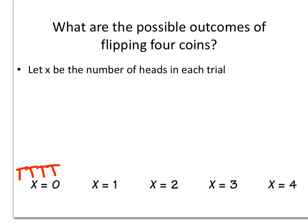For X equals one, then I can have one head and three tails, and that head could be in any one of four spots. I could have three tails and one head in the second spot, or three tails and one head in the third spot, or the final outcome would have three tails and then one head in the fourth spot.